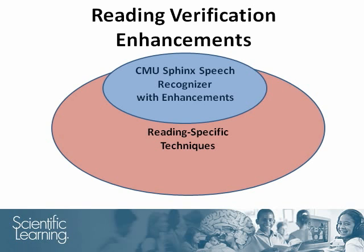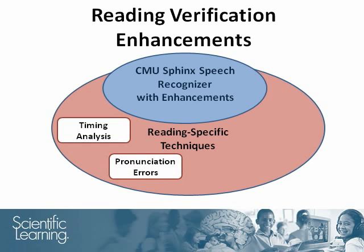The reading verification enhancements fall into three categories. Timing analysis identifies the hesitations and disfluent pauses in a student's reading. Pronunciation error analysis looks for specific mispronunciations or partial pronunciations of words. Word categorization allows the system to treat words differently depending upon their importance in a given text and whether they are new vocabulary.